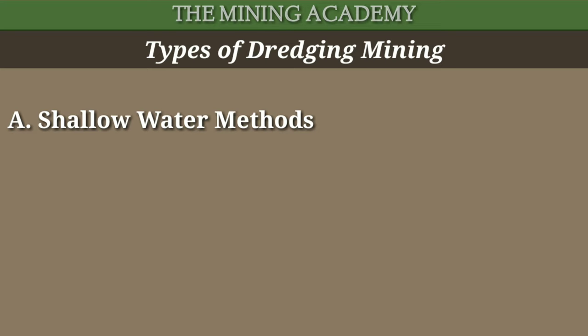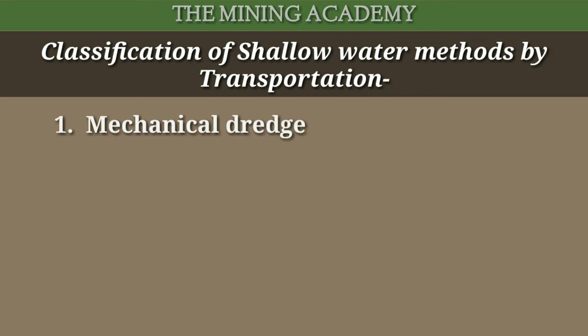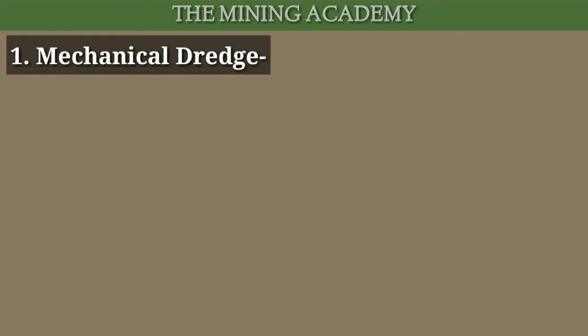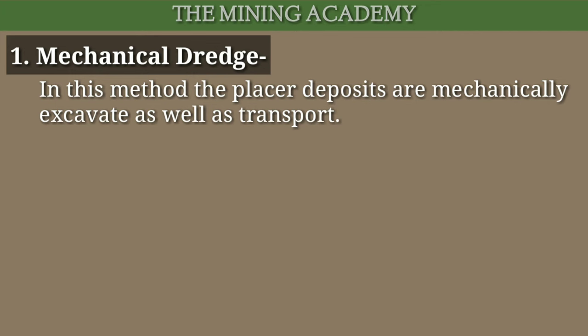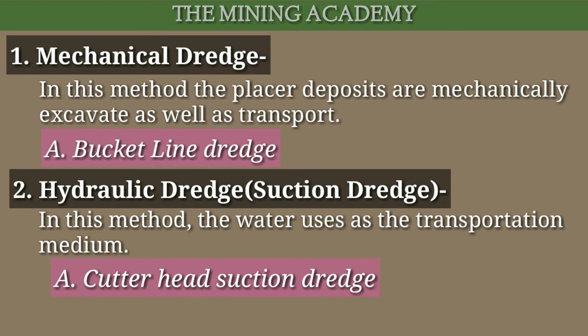Shallow water methods again transportation ke basis par do categories mein classified hai: pehla mechanical dredge, doosra hydraulic dredge ya suction dredge. Pehla mechanical dredge: is method mein placer deposit ka excavation aur transport dono mechanical hi hota hai, aur iski ek method hai bucket line dredge. Doosra hydraulic dredge: is method mein transportation ke liye water ka use karte hain. Hydraulic dredge ki do methods hain — pehli cutter head suction dredge, doosri cutter wheel suction dredge.